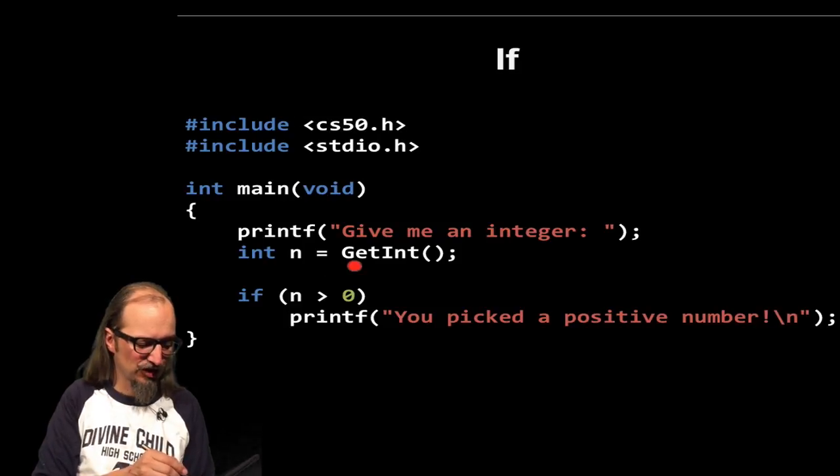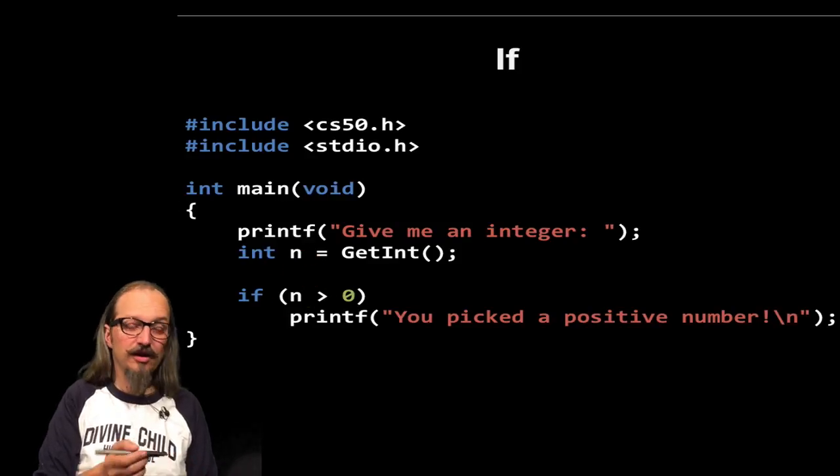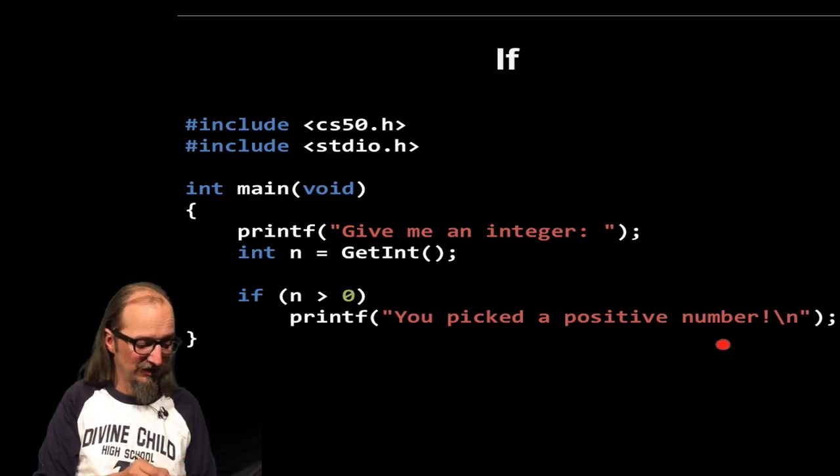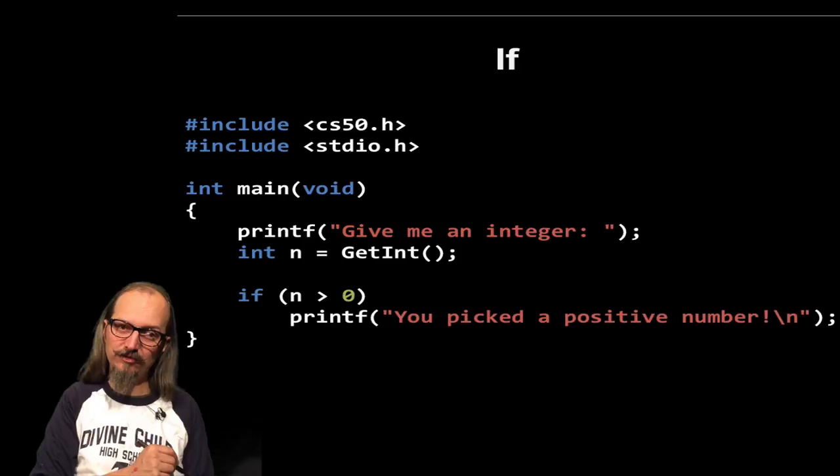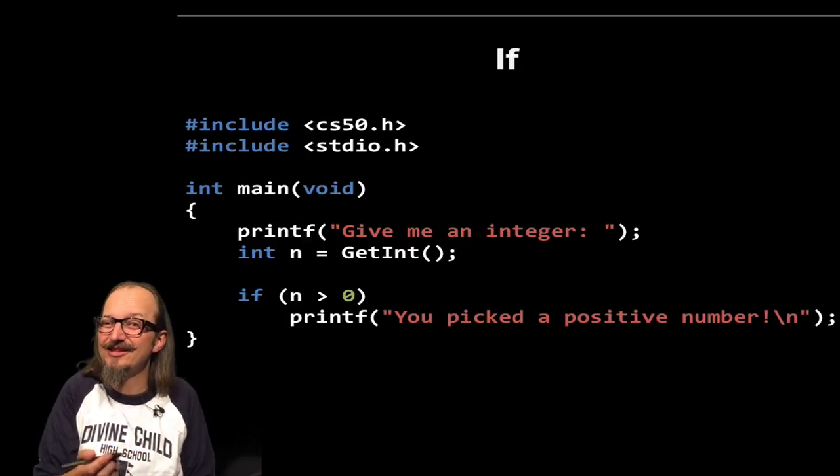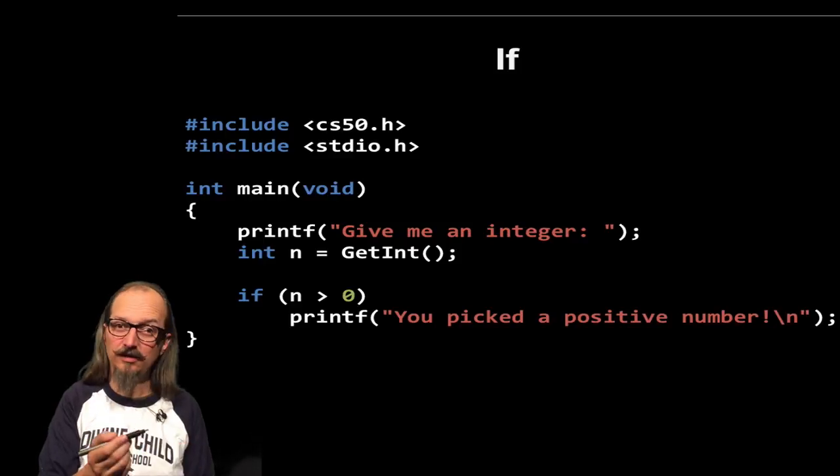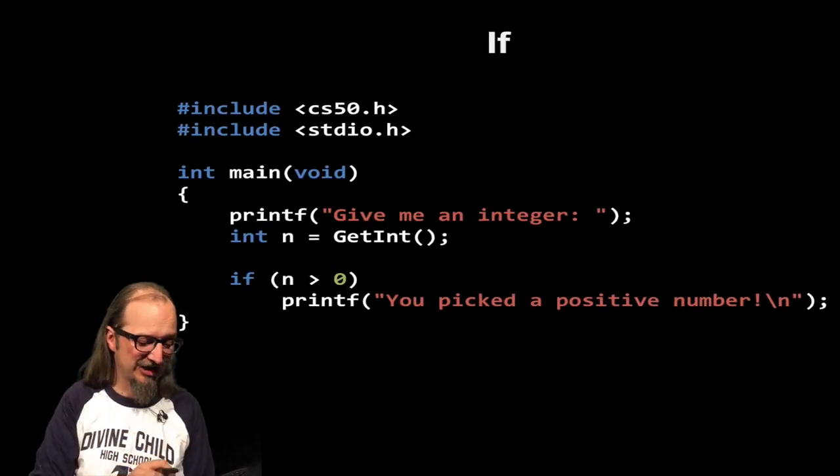In this case, we're asking for an integer. And then we ask the question, if n, so that was the integer that we got from our user, is greater than zero, we will then print this text. We'll say, you picked a positive number. So what we're saying is, if this is true, do this line of text, execute this statement. That's what our if statement is saying in this case. Not so bad, right? So what kind of questions can we actually ask?